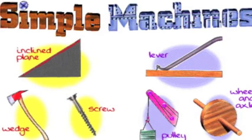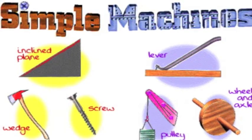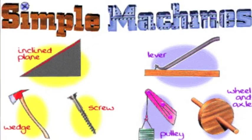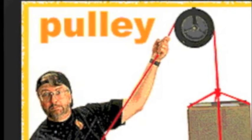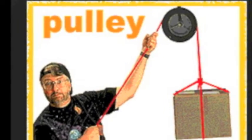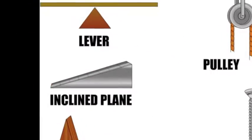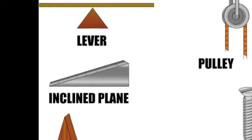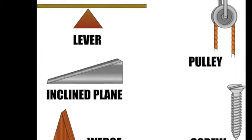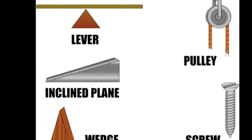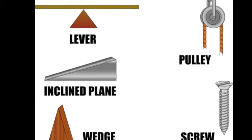In science we're learning about simple machines. An example is a pulley. There's also lever, incline plane, wedge, and a screw.